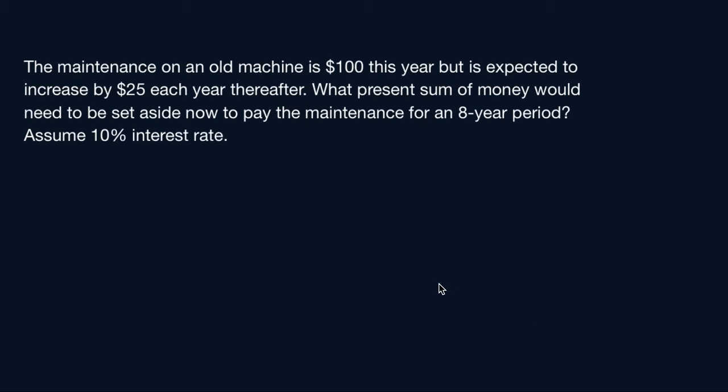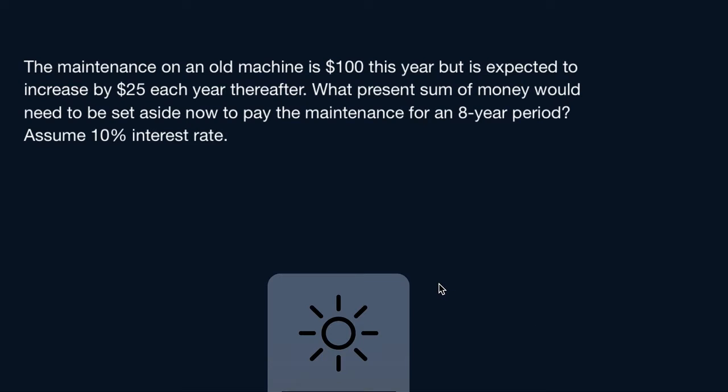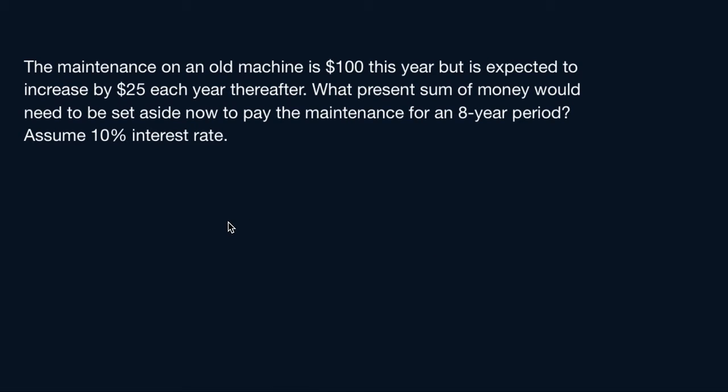Let's get started with what we know. We have $100 this year, so $100 represents your annual amount. So A is $100.